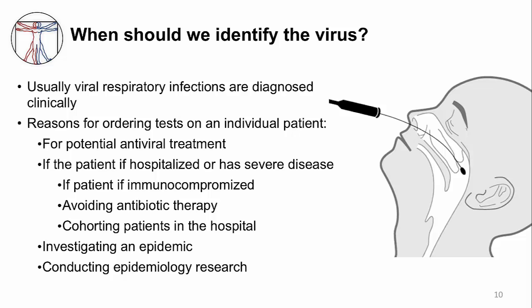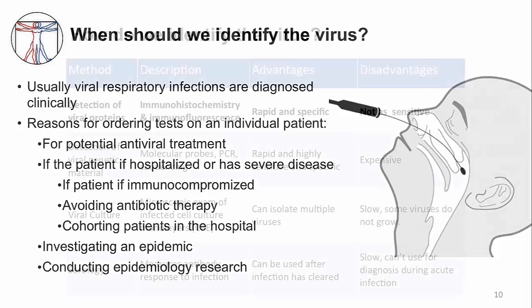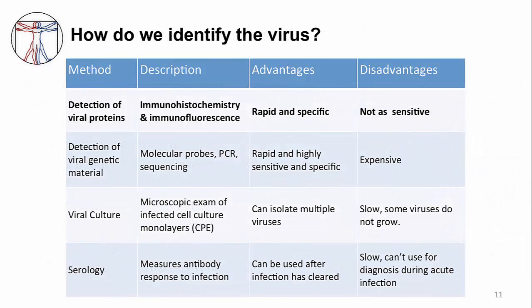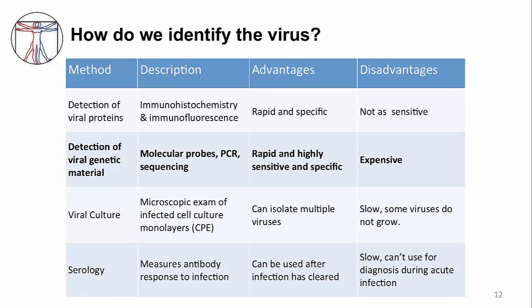Once you collect a sample, you'll have to decide what test to do. This table shows you the different methods available, and different hospitals use different methods. Until very recently, our hospital used the first method, which detects viral proteins by antibody testing for the viral antigen. These tests are very fast, and we had an entire panel that tested most of the respiratory viruses. The disadvantage is that these tests may be negative if the sample doesn't have a lot of viral antigen, due to sample bias or poor collection. So now our hospital is using the second method, which detects viral genetic material with molecular methods, and we now test for more viruses, including rhinovirus.